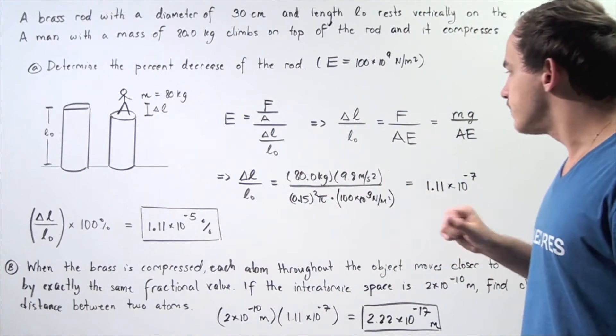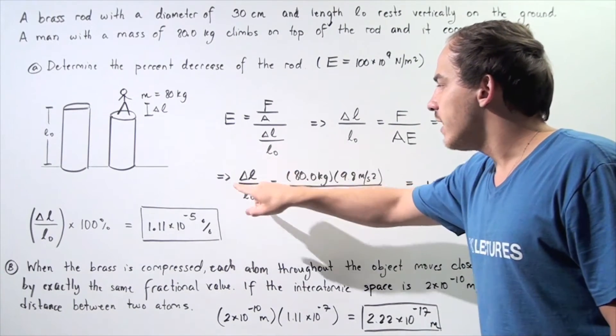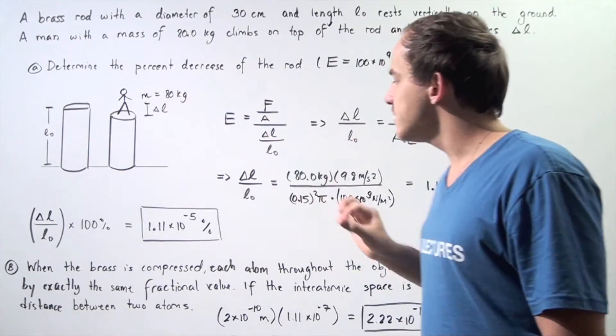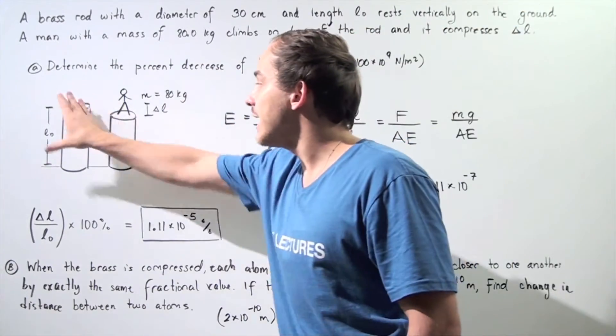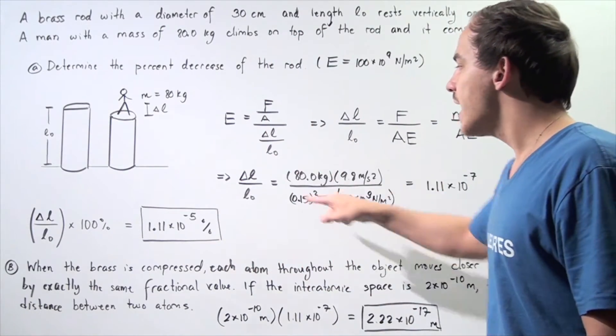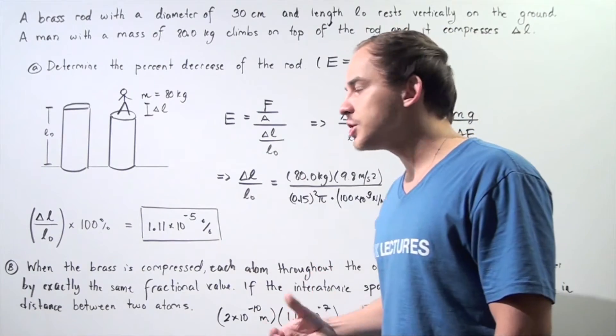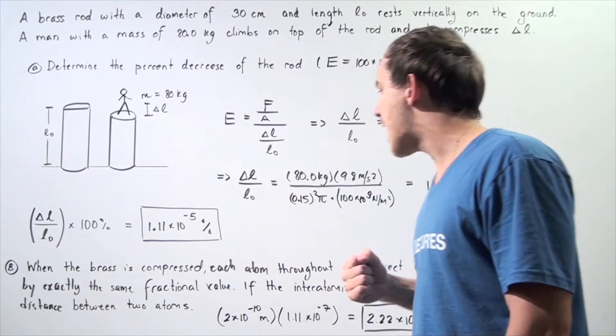So, let's actually solve. The change in L divided by L naught, so change in L is simply our compression distance. L naught is the initial height of our column, of the rod, and this entire fraction, this ratio, is simply the fractional decrease of our object.